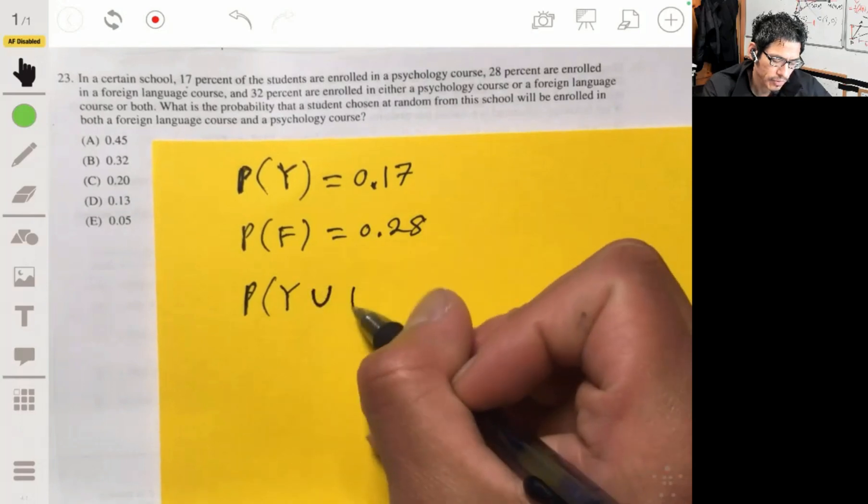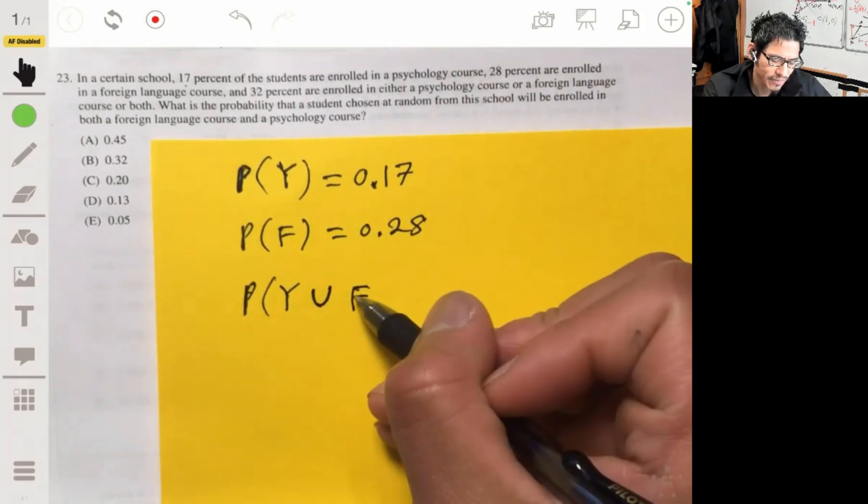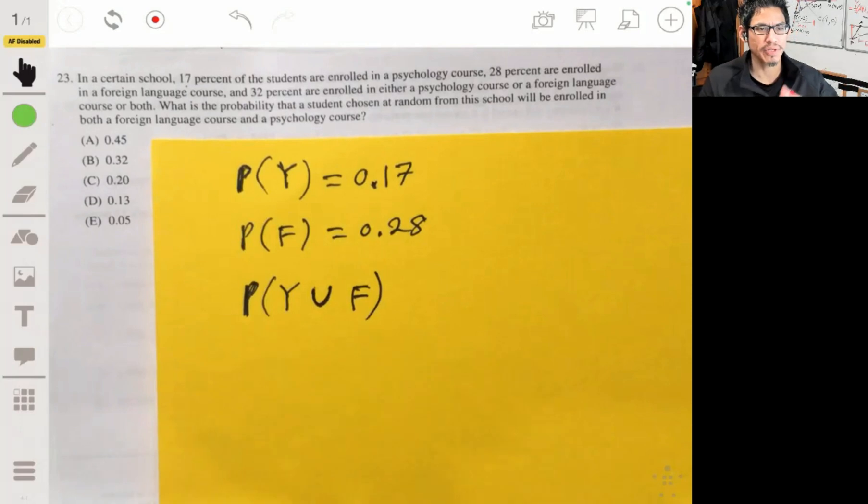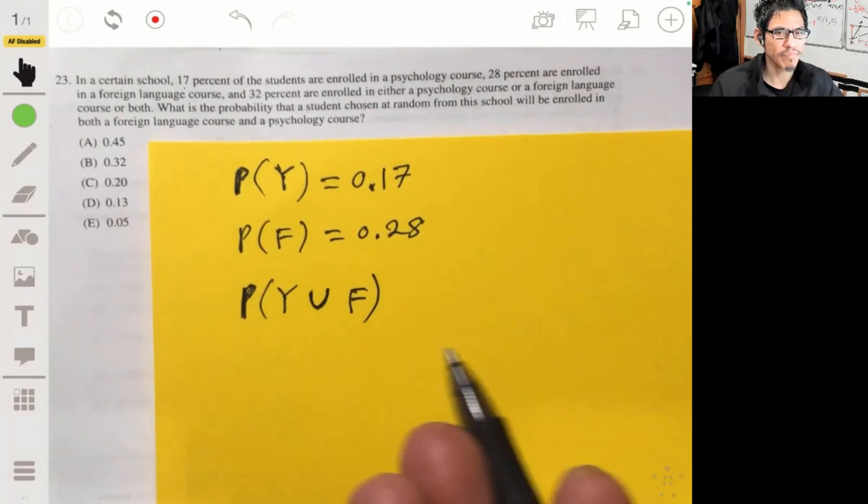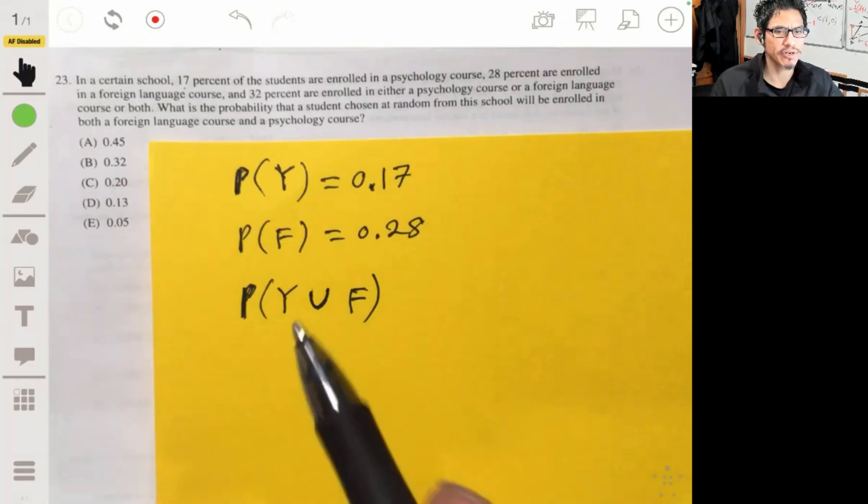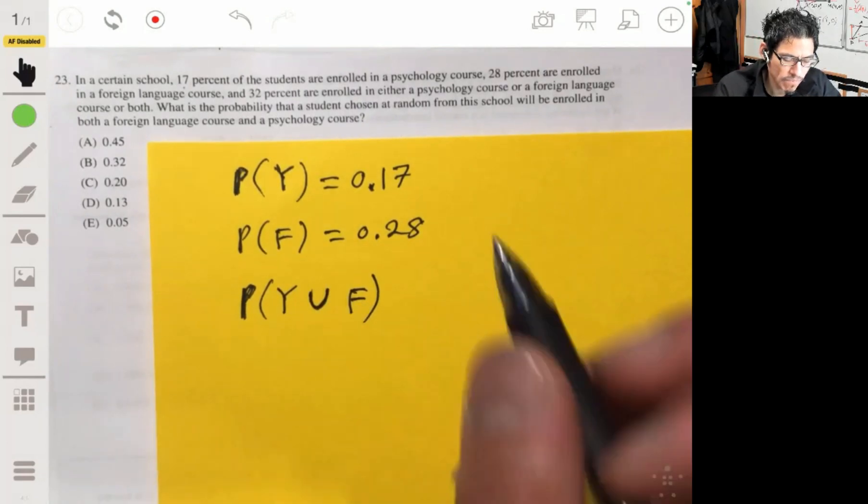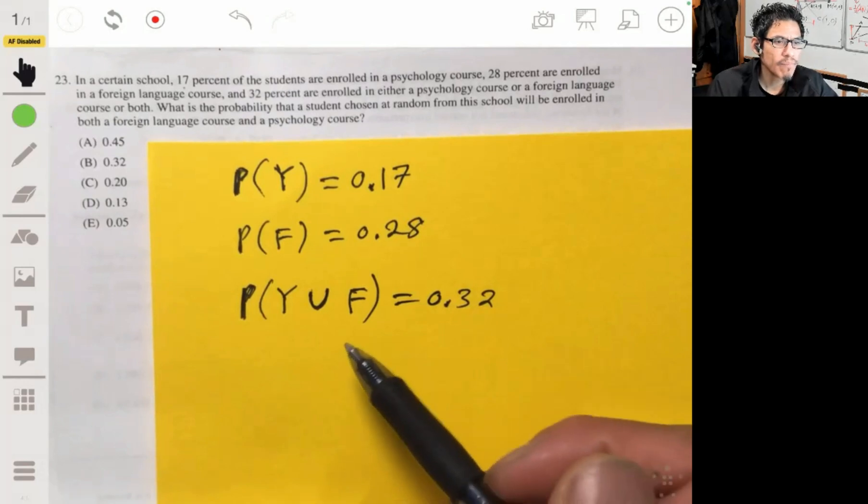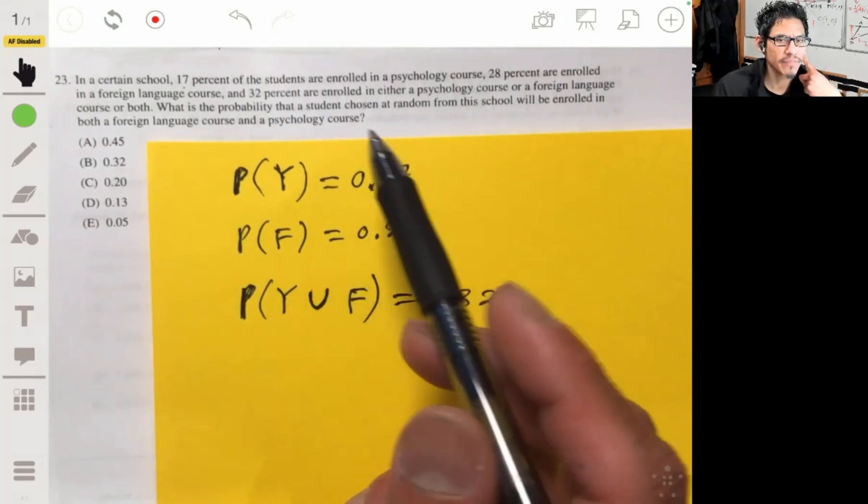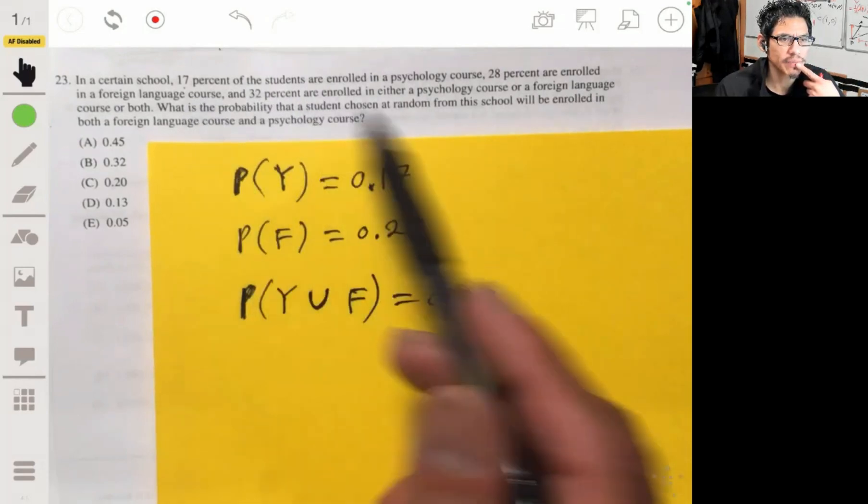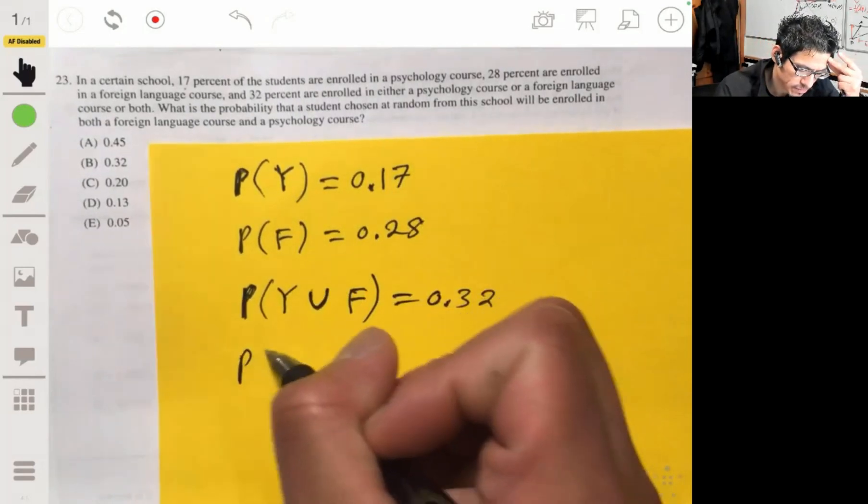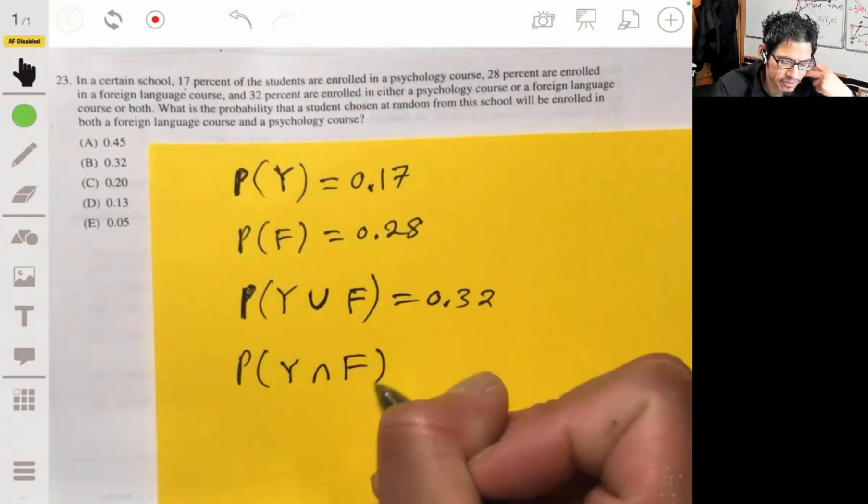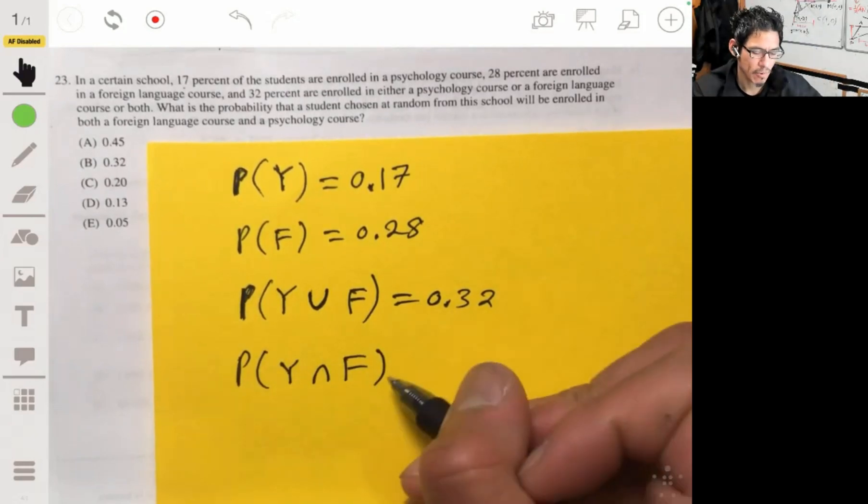So remember, we use the probability of Y or F. We use this union symbol to represent that. So it could be that both Y and F are occurring, or just Y or just F. And this is going to be 0.32. Then what do we want to find in terms of our setup of symbols? We want to find the probability of being in both a foreign language course and a psychology course, the probability of Y and F. So Y intersect F, the upside down union. What's this going to be equal to?